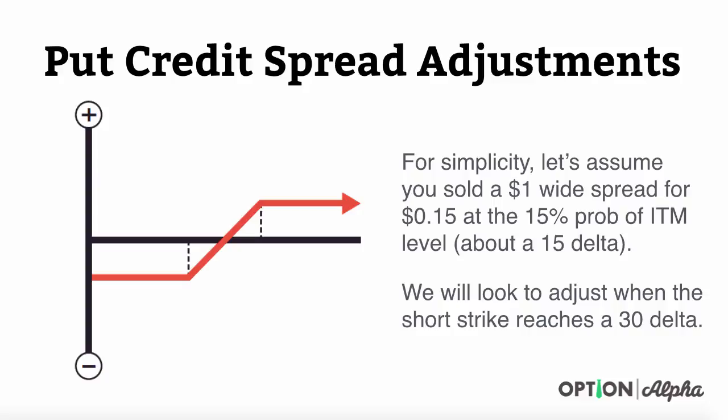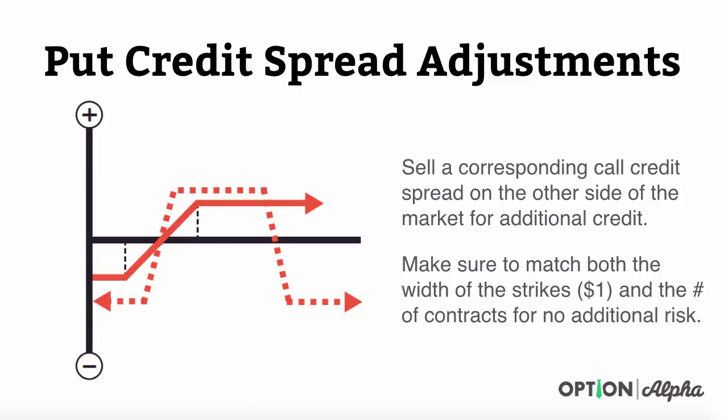We're trading it originally at a 15 delta, so we're basically saying that if the probability of losing on this trade doubles up to a 30 delta, then what we're going to do is adjust this position and make some sort of adjustment that reduces risk.